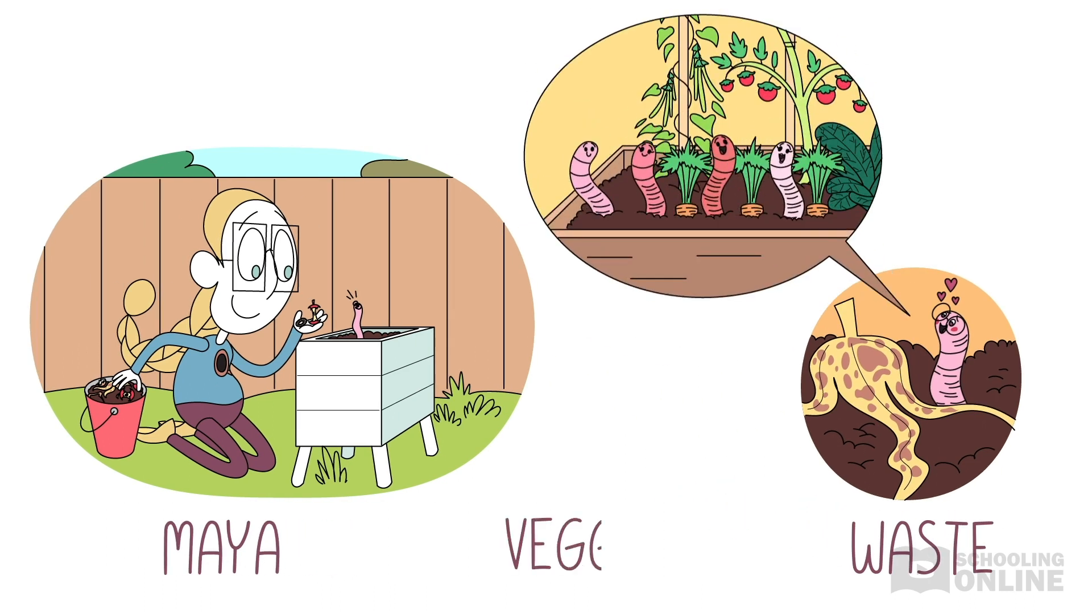She took some worms to the Veggie Patch. More of us. Another batch. She says we make the richest soil. It's so good, it's almost royal.